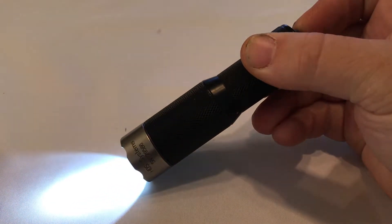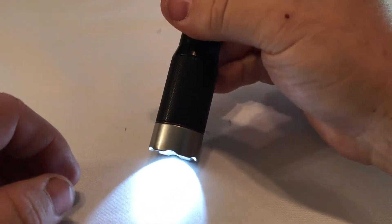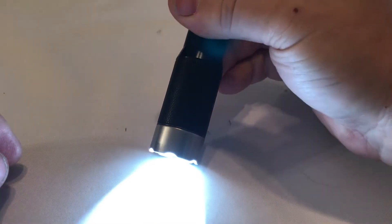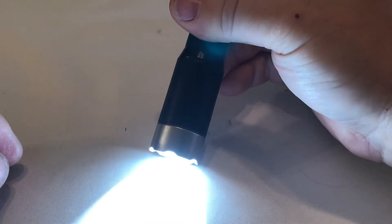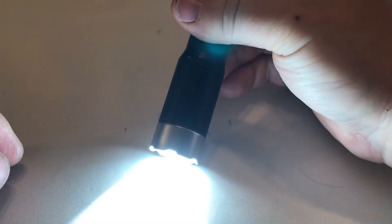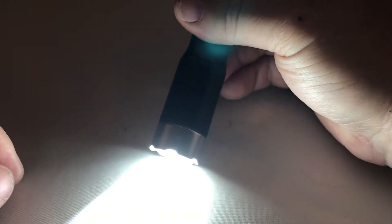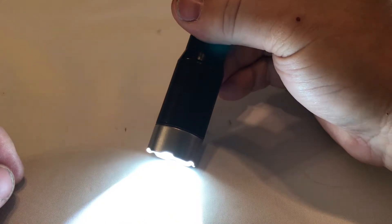When we reach maximum, it's going to double blink again. Now we know we're at maximum. Now it's going to start going through the strobes again.